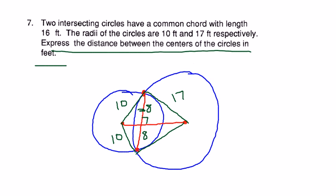Well, we've got two triangles. The first triangle is this one, and that triangle is a 10 on the hypotenuse, which is that radius, 8 which is half the common chord, and hopefully you recognize this as a 6, 8, 10 right triangle. If you don't recognize the Pythagorean triple, then you can do the Pythagorean theorem to get that that value is 6.